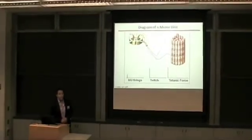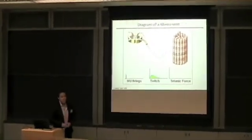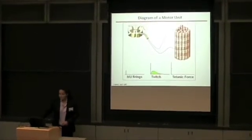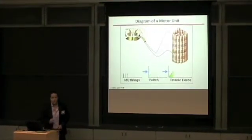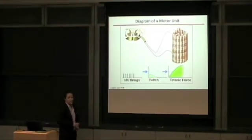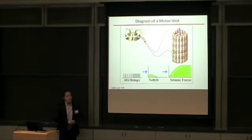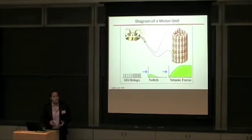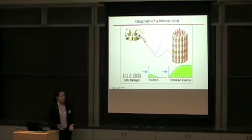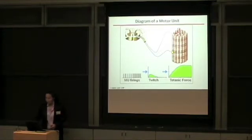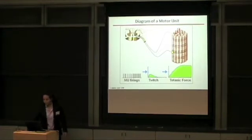When a motor unit is activated, the corresponding muscle fibers contract and create a force twitch. As more of these electrical impulses are sent, the twitches fuse and form a tetanic force output. So a motor unit in this context is a force quantum. It's the smallest unit the body uses to modulate the intensity of the contraction. We'll be approaching this study of force control from a motor unit perspective.